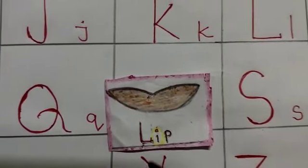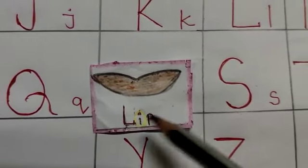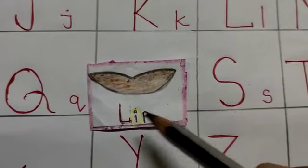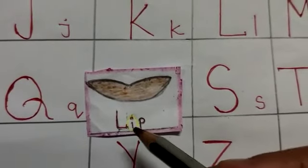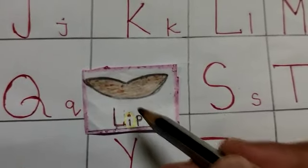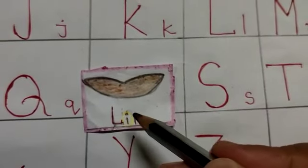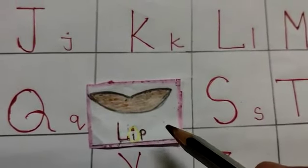So in the word L, I, P, leaf, I is the vowel. L and P are consonants.